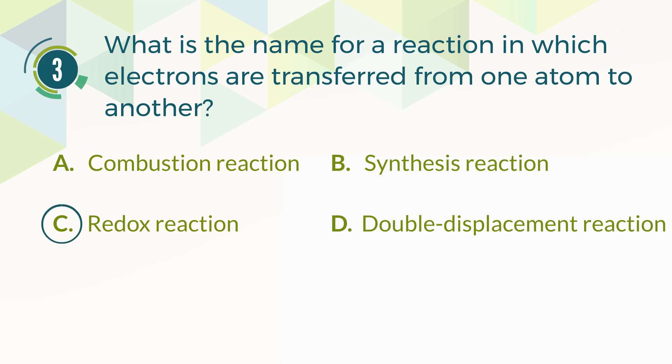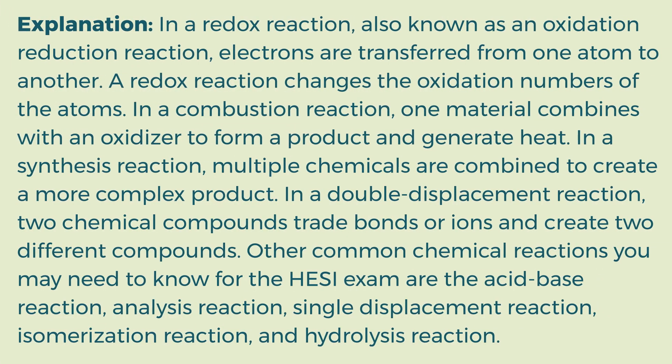The correct answer is C, redox reaction. In a redox reaction, also known as an oxidation-reduction reaction, electrons are transferred from one atom to another. A redox reaction changes the oxidation numbers of the atoms. In a combustion reaction, one material combines with an oxidizer to form a product and generate heat. In a synthesis reaction, multiple chemicals are combined to create a more complex product. In a double displacement reaction, two chemical compounds trade bonds or ions and create two different compounds.